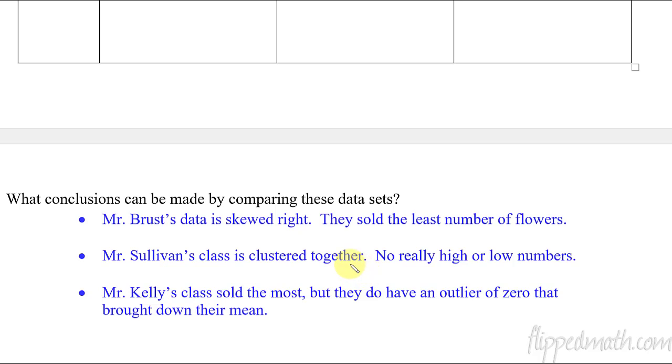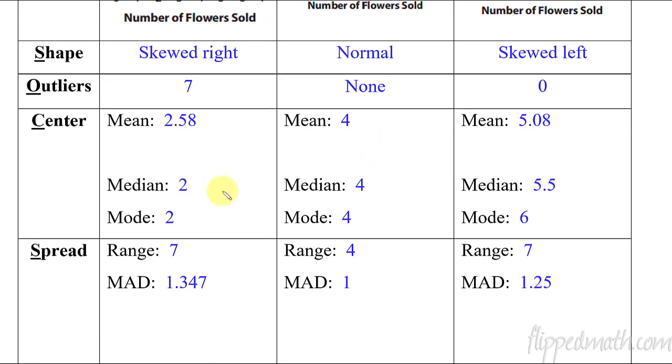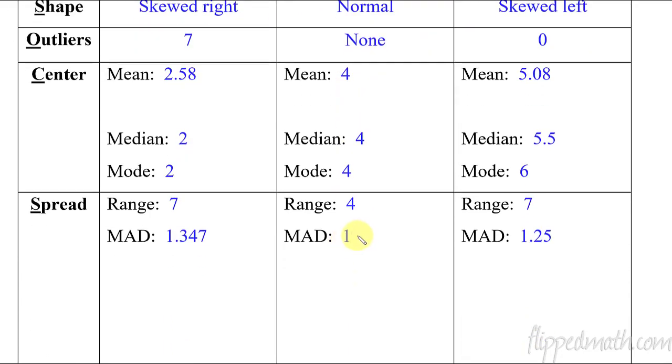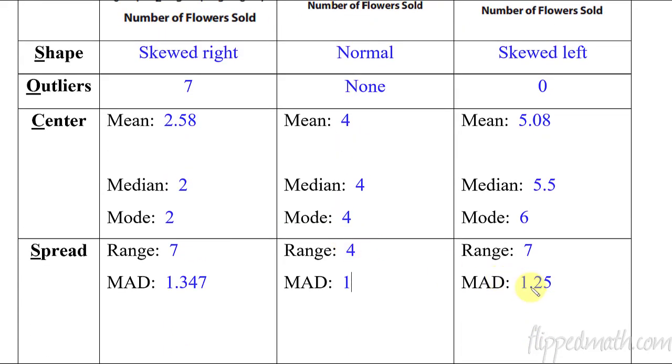All right. So conclusions, comparing data sets. When we compare the data sets, there's different questions that we might be asked. So in the practice, you're going to have a few questions that will be specifically asking specific things. And so you might have to give some numbers, examples of what you're comparing. And then if you don't have any specific thing that you're asked to conclude about, then you just try and make some generalizations based on the numbers that you've been able to figure out. The spread, the mean absolute deviation. And so that shows you here, this mean absolute deviation of number one, that tells you Mr. Sullivan's data is spread out the least. So Mr. Kelly's is spread out a little bit more. Mr. Brust is spread out the most. That helps us know what's going on with the spread.